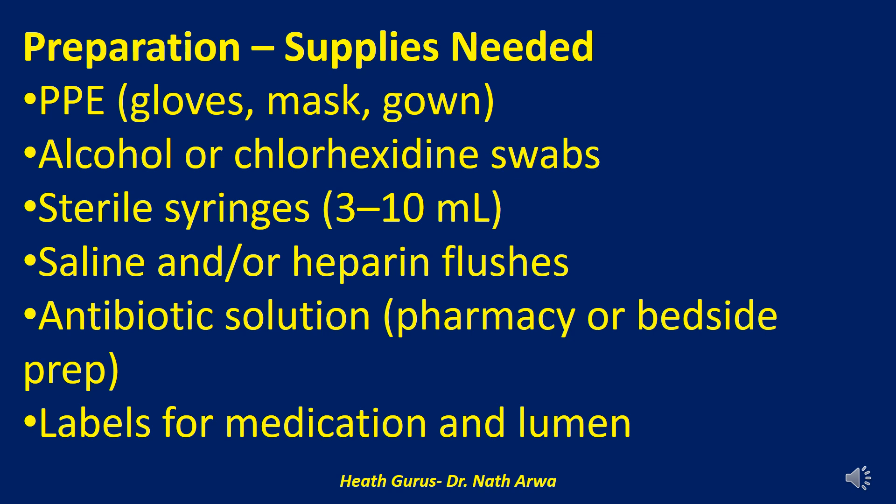We will now switch gears to the preparation phase. Materials required include: 1. PPE, including gloves, mask, gown, and eye protection as per infection control. 2. Alcohol swabs or chlorhexidine 2% in 70% isopropyl alcohol. 3. Sterile syringes with a capacity of 3 to 10 milliliters, depending on volume required. 4. Saline flushes, usually 0.9% sodium chloride, and/or heparin flushes if your hospital protocol allows. 5. The prescribed antibiotic from pharmacy or compounded on-site. 6. Labels for medication and catheter lumen. And 7. A waste container for biohazard disposal.